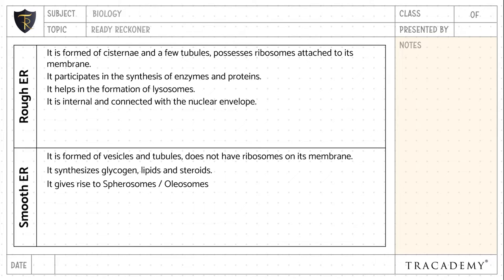Rough endoplasmic reticulum is internal and connected with the nuclear envelope. Whereas smooth endoplasmic reticulum is peripheral and may be connected to the plasma membrane.